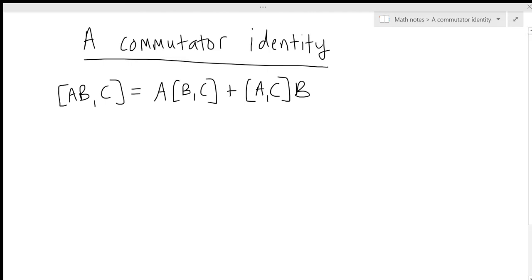Okay, in this lesson we're going to derive the commutator identity that you see here. So it's an identity for three operators.